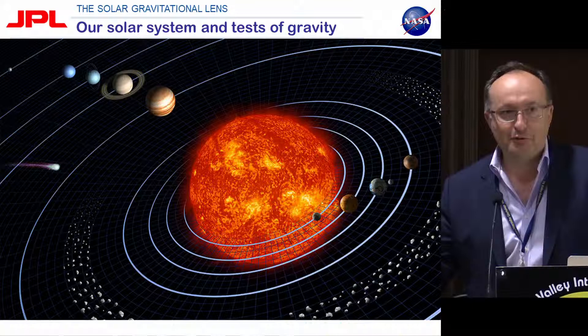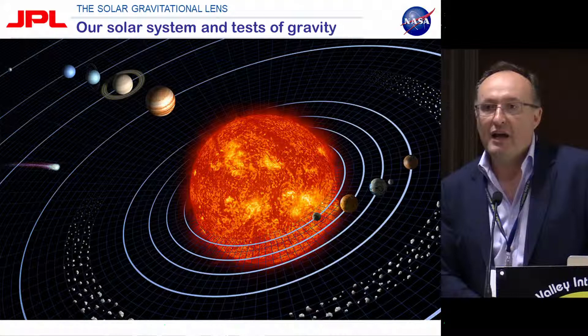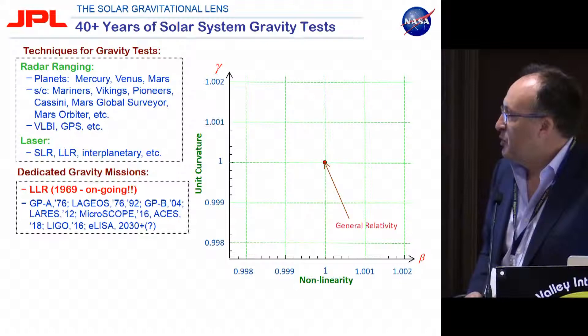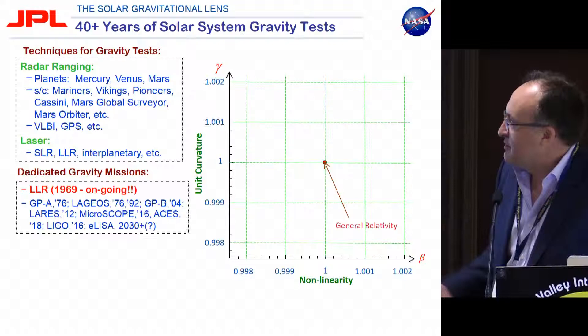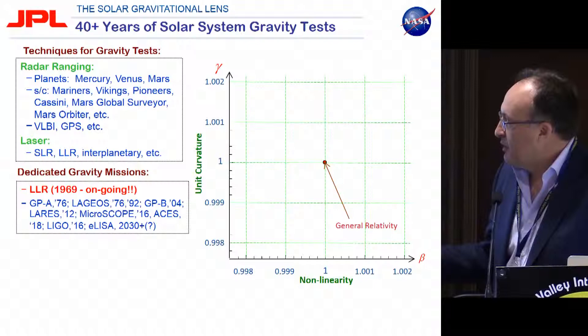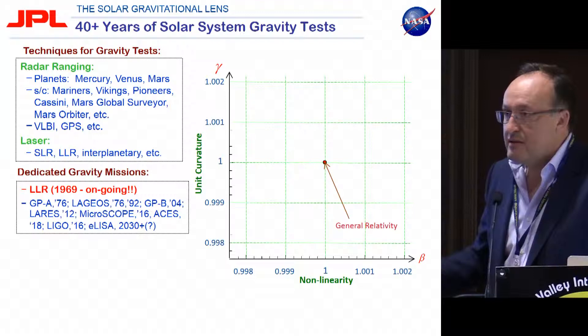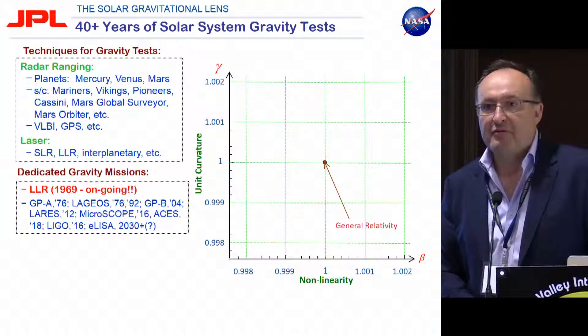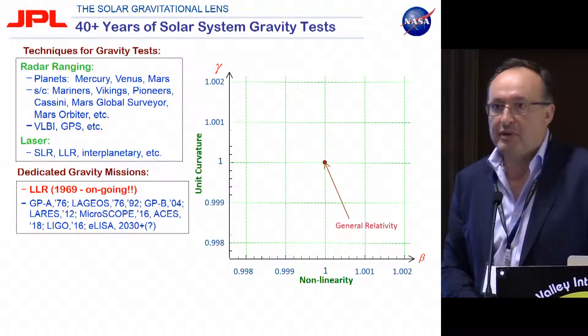My laboratory, the Jet Propulsion Lab, is the solar system. We fly spacecraft everywhere in the solar system and test General Relativity and gravity on large scales. We use multiple technologies: planetary microwave ranging to Mercury, Venus, and Mars; multiple spacecraft; very long baseline interferometry; GPS; laser ranging to spacecraft orbiting Earth; laser ranging to the retroreflectors left by Apollo astronauts on the Moon; and interplanetary laser ranging.